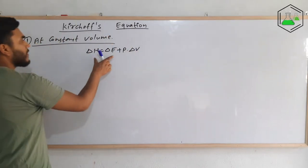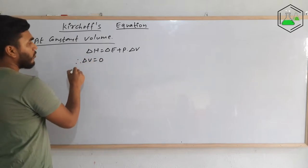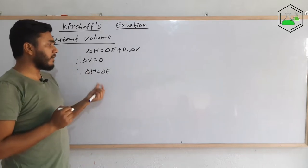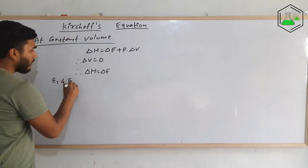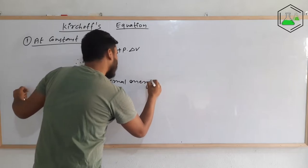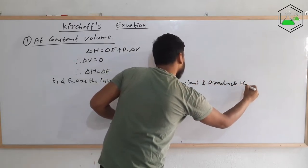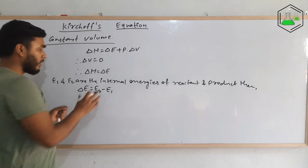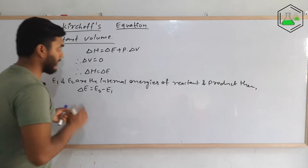I have already written the formula of change in enthalpy, and we know that at constant volume ΔV will be equal to 0. So we get ΔH = ΔE. That means the total heat content of the system depends on the internal energy change. And we know that if E1 and E2 are the internal energies of reactant and product, then ΔE = E2 − E1. Now let's differentiate this equation at constant volume with respect to temperature.